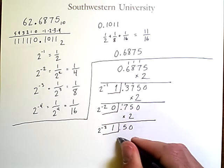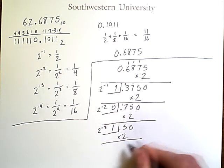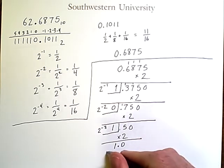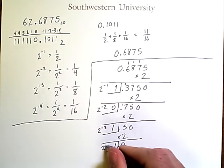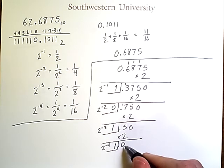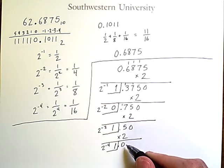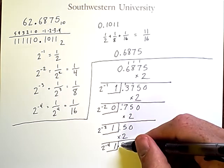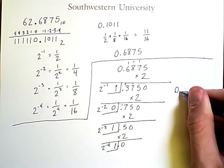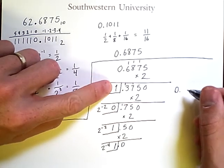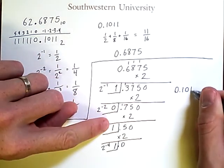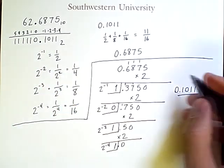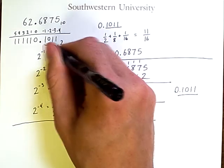And then we're left with 0.5 times 2 equals 1.0. And this is for 2 to the negative 4. And once we have a 0 here, any further multiplication by 2 would simply equal 0. Hence there is no point in continuing. And that means we can take these digits and order them into 0.1011, which is exactly what we had previously.